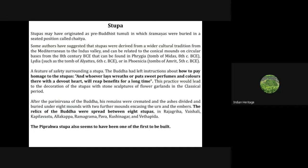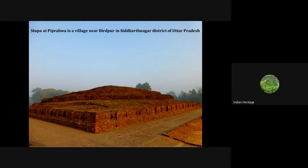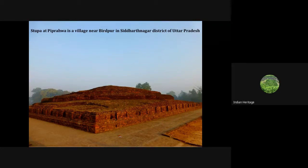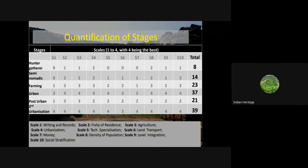The architecture of stupas developed from some of the oldest stupas in India. The relics of the Buddha were spread between Rajgriha, Vaishali, Kapilavastu, Allakappa, Ramagrama, Pava, Kushinagar, and Vethadipa. The stupa in Siddharthnagar district of Uttar Pradesh is among the first to be built. Later development includes the Amaravati stupa and other examples. The earliest cave architecture and stupa tradition led to later developments at Ajanta and Ellora.